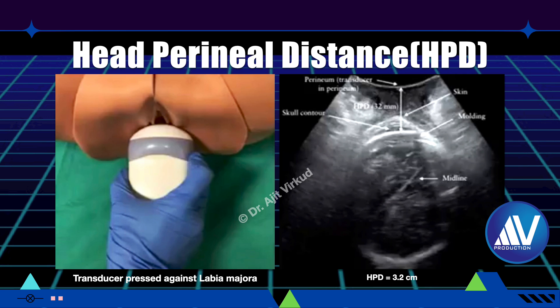In conclusion, the time has come to use intrapartum ultrasound examination to assess the progress of labor using these two parameters — angle of progression and head-to-perineum distance. To apply these, one must understand the concepts, and for that one should see educational videos like this.